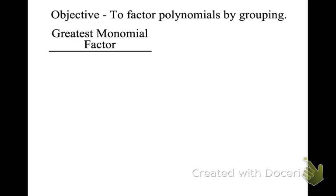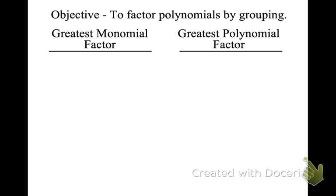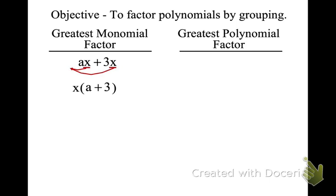We use this method when we have four or more factors. In order to do a GCF, or greatest monomial factor, we have to look at each term and see if they have anything in common. Notice here we have an x in common, so we can factor an x out. When we factor that out, it doesn't disappear — it goes to the outside of a parenthesis, and I'm left with x plus 3 inside. This is a monomial factor, and this is what we call a binomial factor.